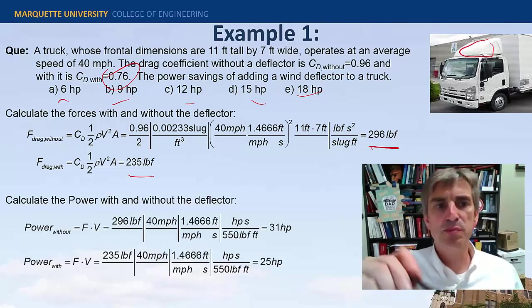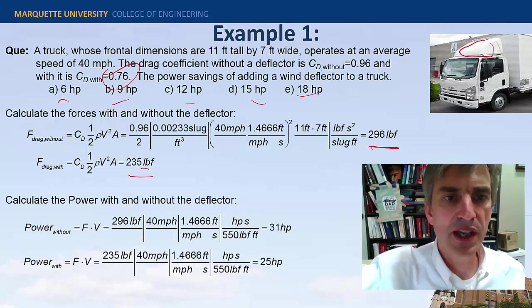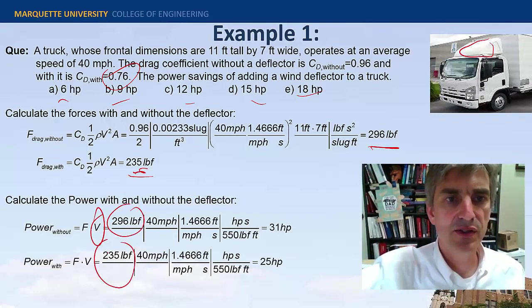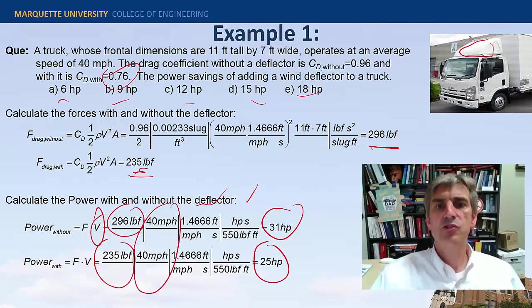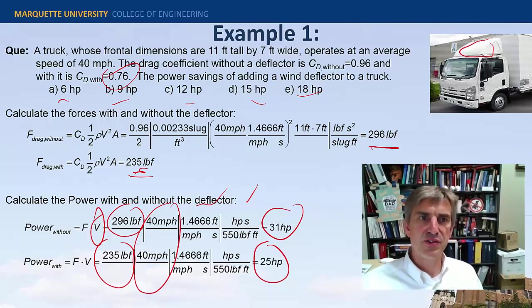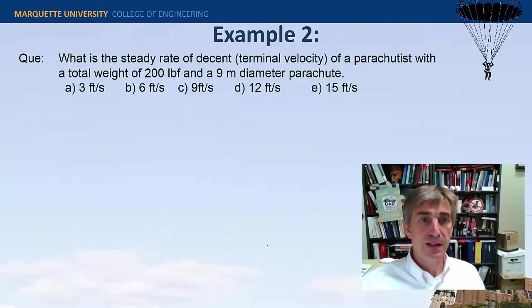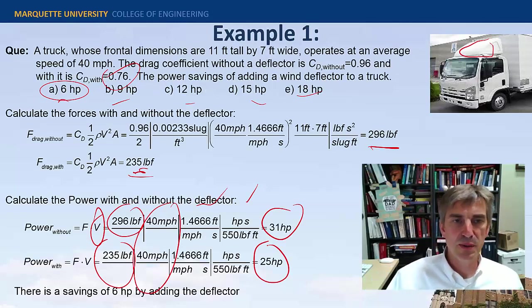So to calculate the power, we multiply the force calculated times the velocity. So there's 296 and 235 times 40 miles per hour, plus a bunch of unit stuff, 31 versus 25. So the difference is about 6 horsepower. That's quite significant, right? 6 horsepower.